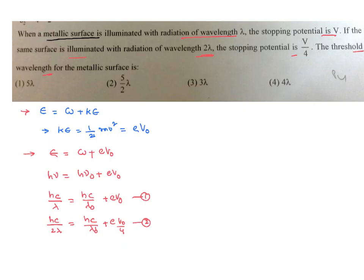Then we can rearrange the terms. So we can write hc of 1 by lambda minus 1 by lambda₀ as ev₀ from the first equation. hc of 1 by 2 lambda minus 1 by lambda₀ as ev₀ by 4 from the second equation. Dividing these two equations will further give you 1 by lambda minus 1 by lambda₀ by 1 by 2 lambda minus 1 by lambda₀ equal to ev₀ by ev₀ by 4.